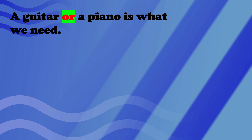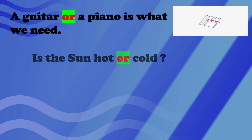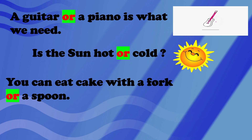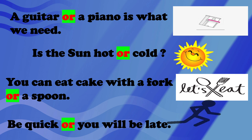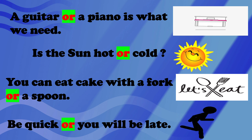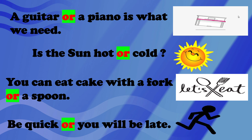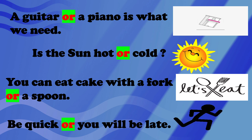Let us take a few more examples of conjunction OR. A guitar or a piano is what we need. Is the sun hot or cold? You can eat cake with a fork or a spoon. Be quick or you will be late. In all these sentences, OR is representing a conjunction or a connecting word.